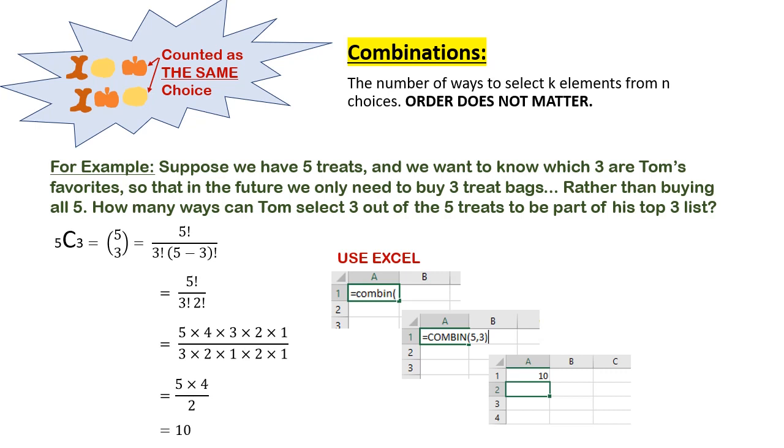Though, what if we don't care about which one is Tom's first, second, and third choice? Rather, we just want to know which three are his favorite, so that we don't have to buy five bags of treats and we can just buy three bags of treats in the future. So we don't care about the order of the top three. We just care which are his top three. Here we would use combinations.